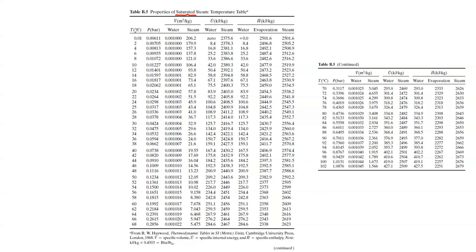The temperature is large. The temperature is medium and the amount of pressure. The temperature is low — the meter cube per kg, internal energy kilojoule per kg, enthalpy kilojoule per kg — okay, water.